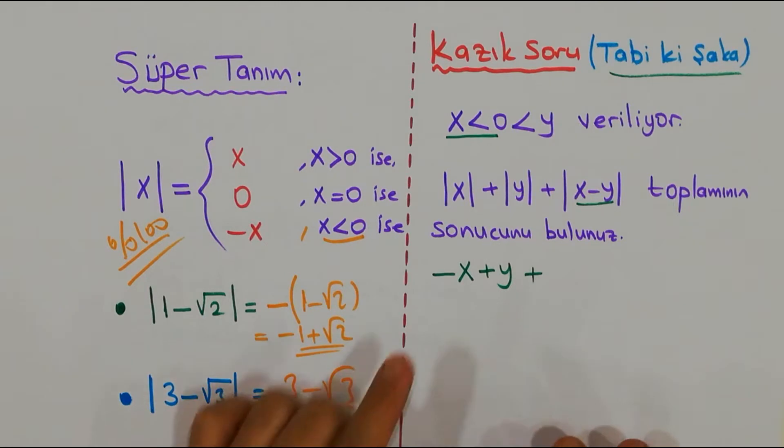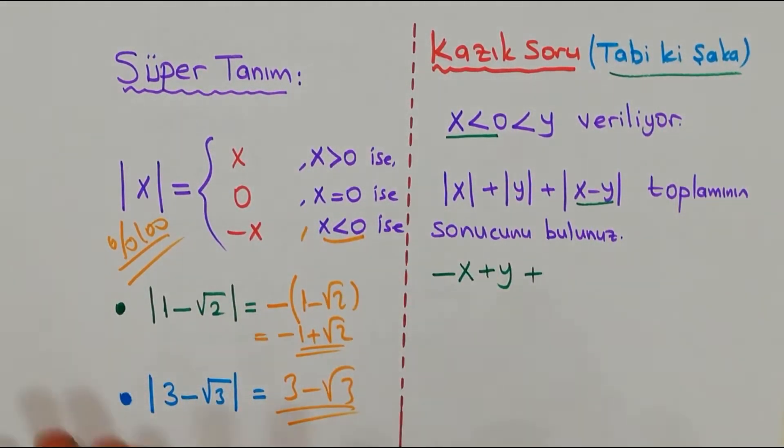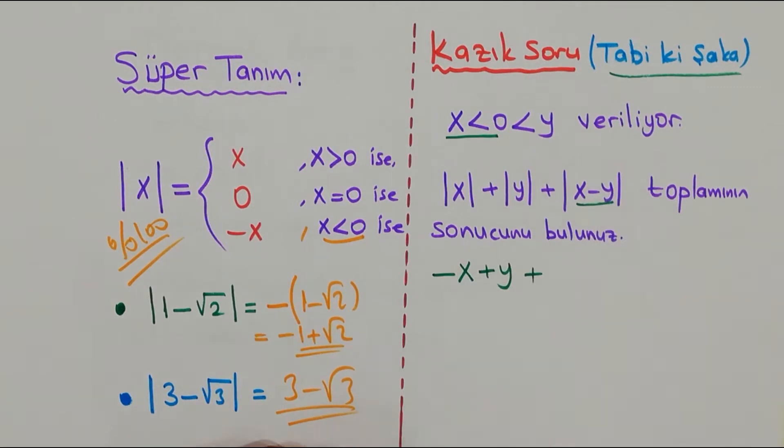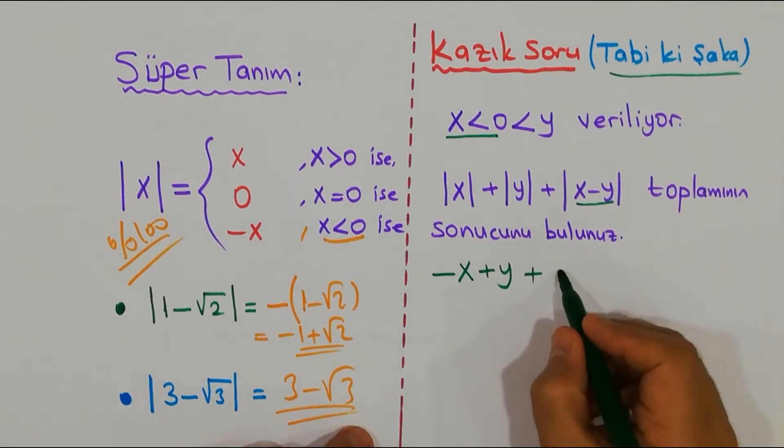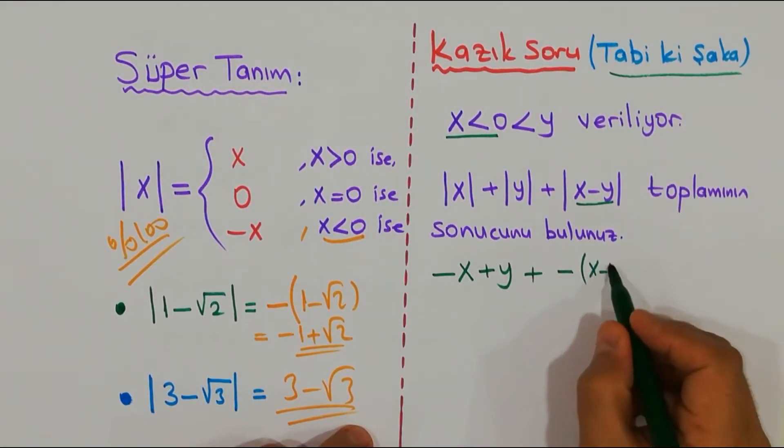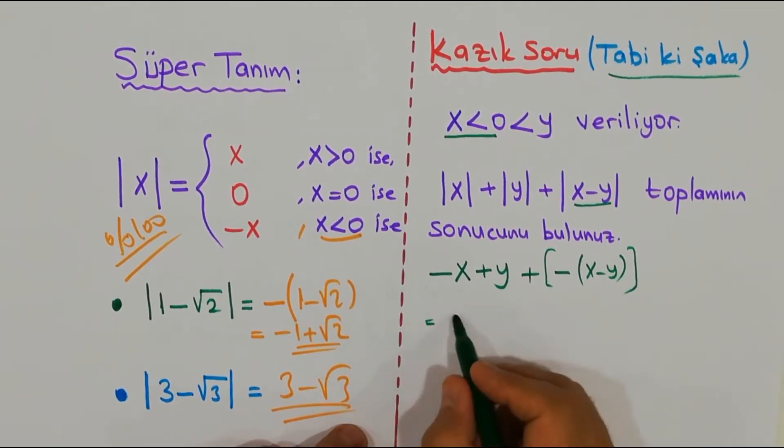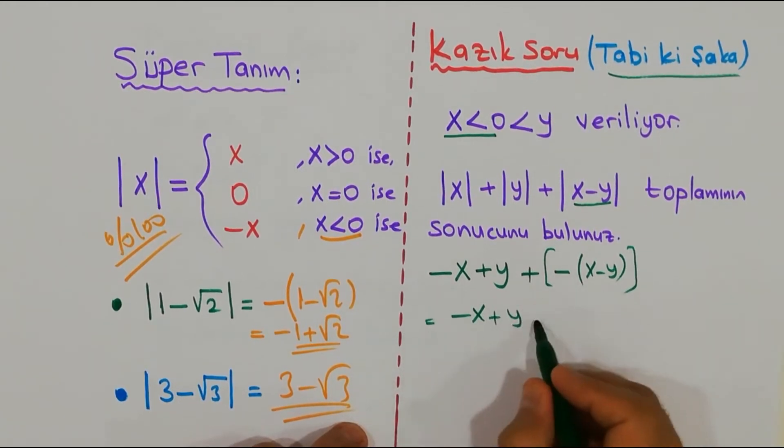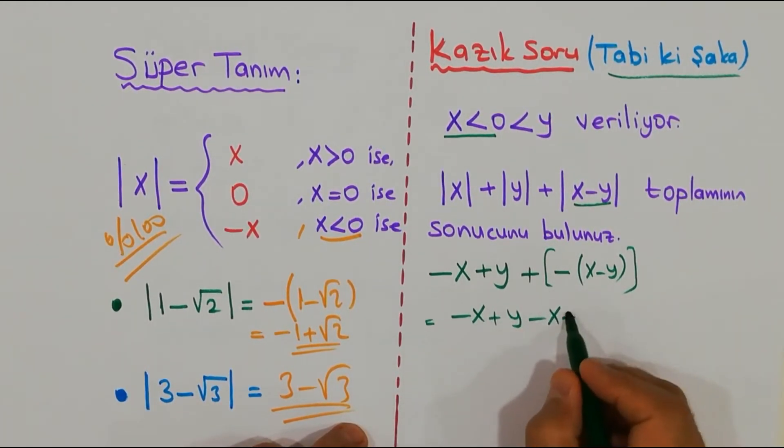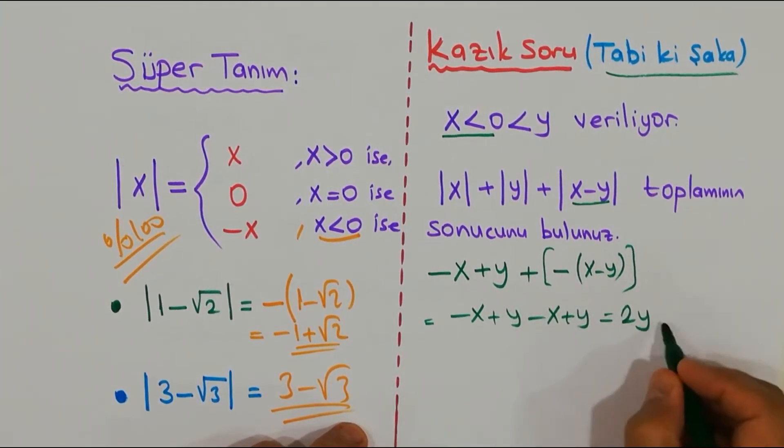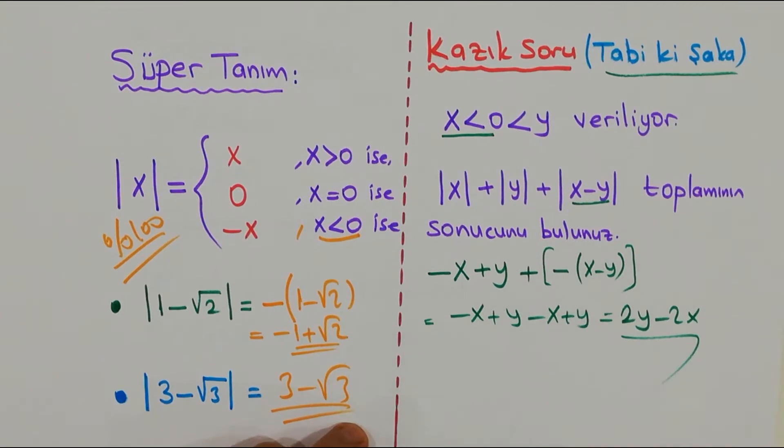Peki acaba acaba eksi y'nin işareti ne soruyoruz sevgili dostlar? x, y'den küçüktür burada vermiş onu. Negatif pozitif olması kesinlikle önemli değil, x y'den küçük, bitti. Küçük sayıdan büyük sayı çıkarıyorsunuz yani önüne bir eksi işareti gelecek değerli dostlarım. Şöyle diyebilirsiniz mesela ve muhteşem şeyleri görelim.